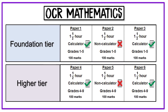The exam board we use for maths across all of our schools is OCR. The maths GCSE is tiered — students will either sit foundation or higher. On foundation, students can attain grades 1 to 5; on higher, grades 4 to 9. All students will sit three one-and-a-half hour exams made up of three papers, each out of 100. There are two calculator papers — paper 1 and paper 3 — and one non-calculator paper, paper 2.